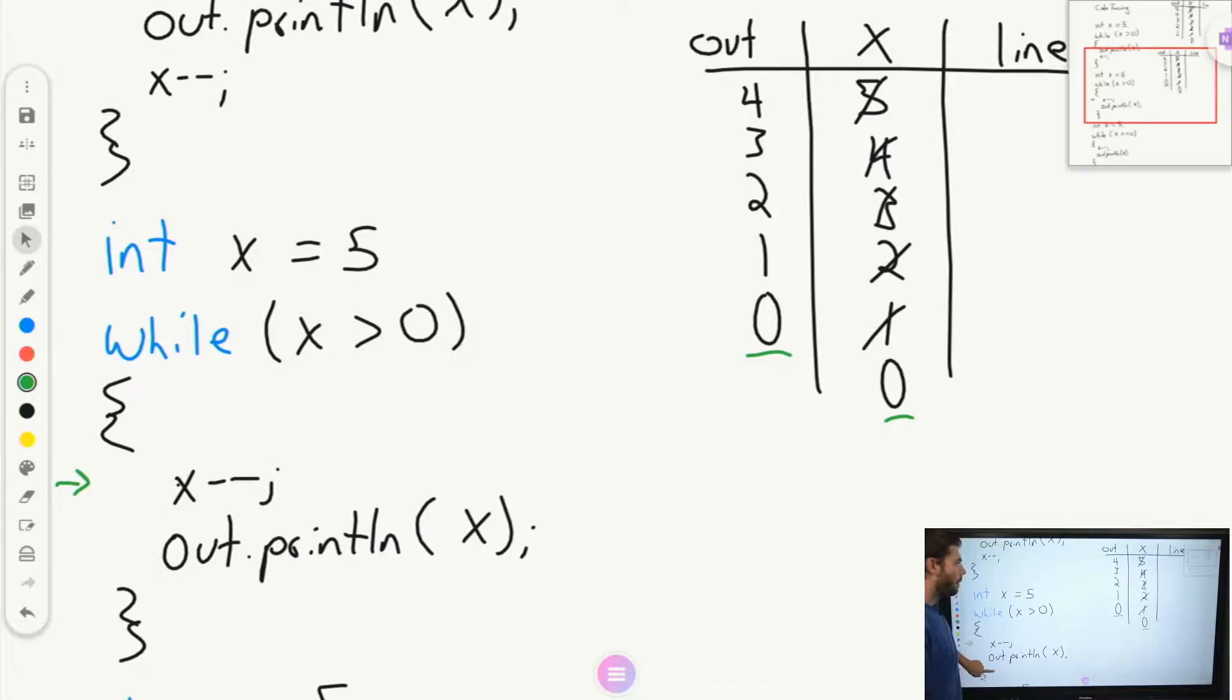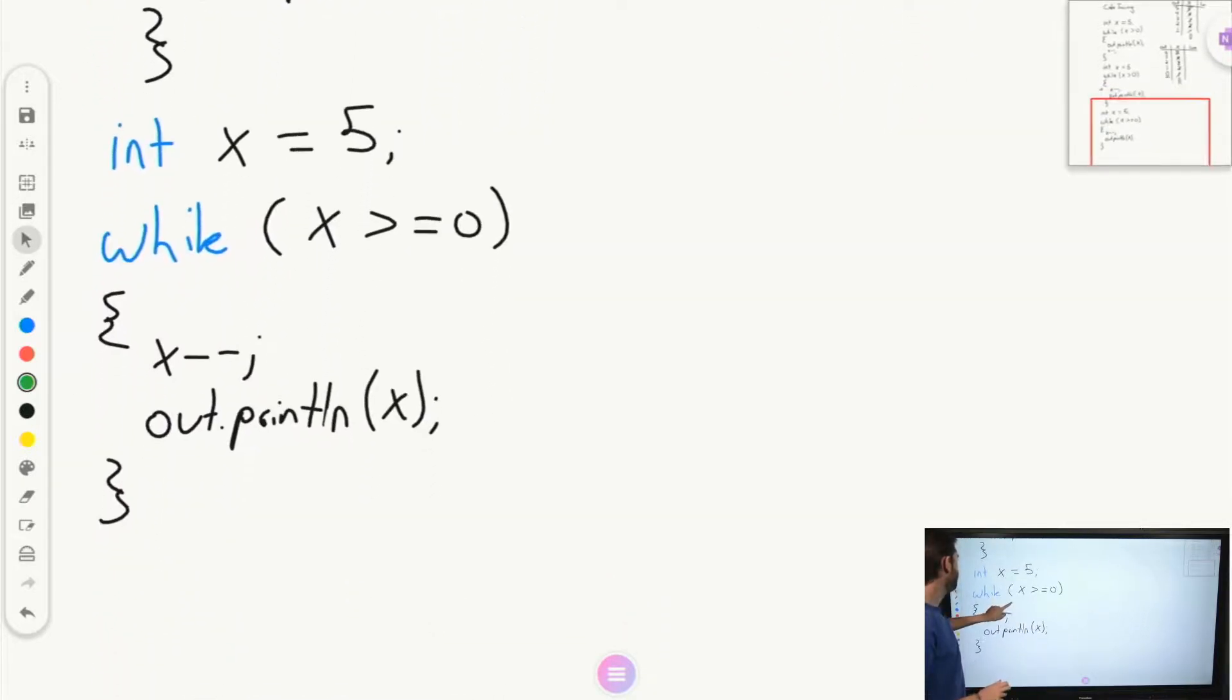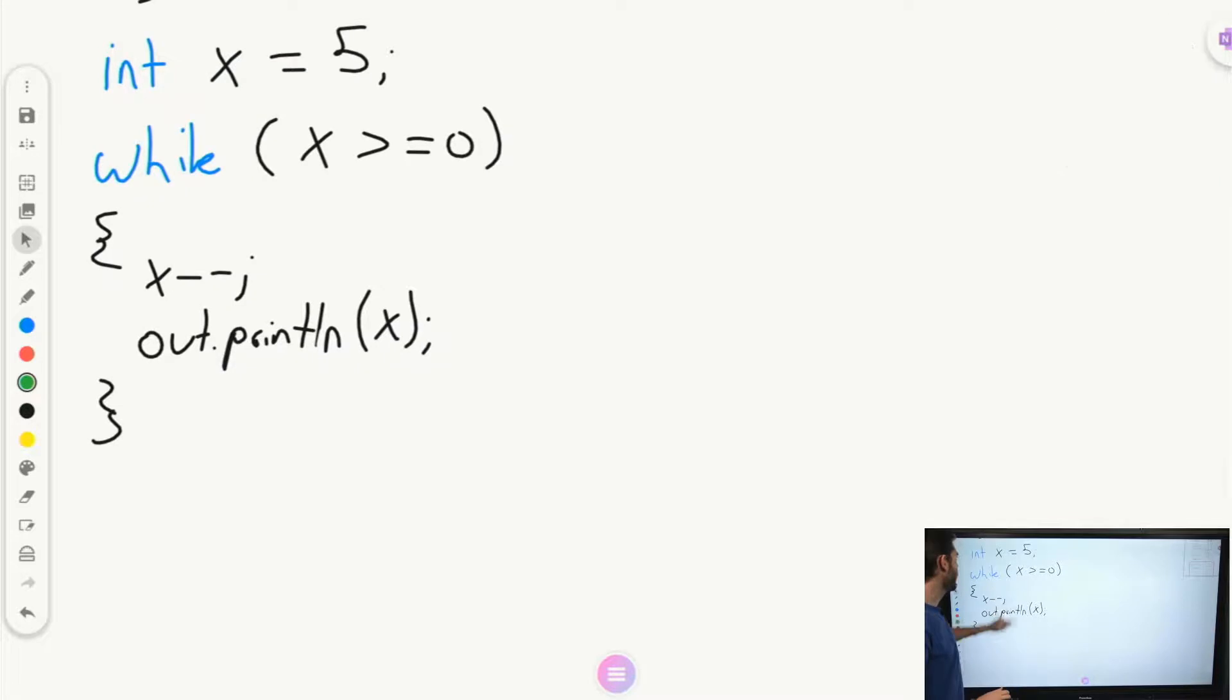Let's talk about one more boundary case that gets it a little bit more interesting. Let's try this one more time. Set up your code trace and try this example right here. What is the output and what is the final value of x?